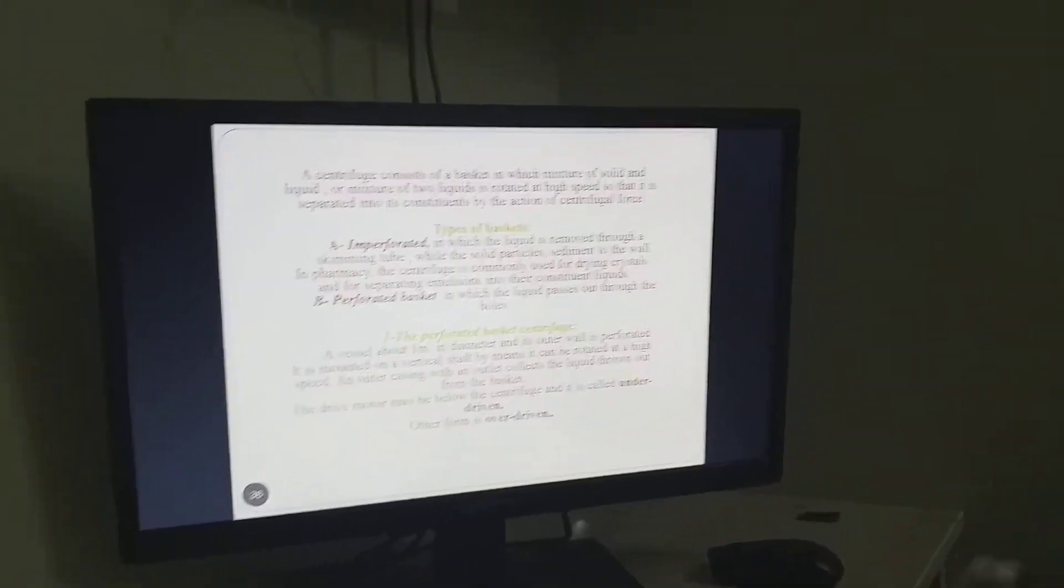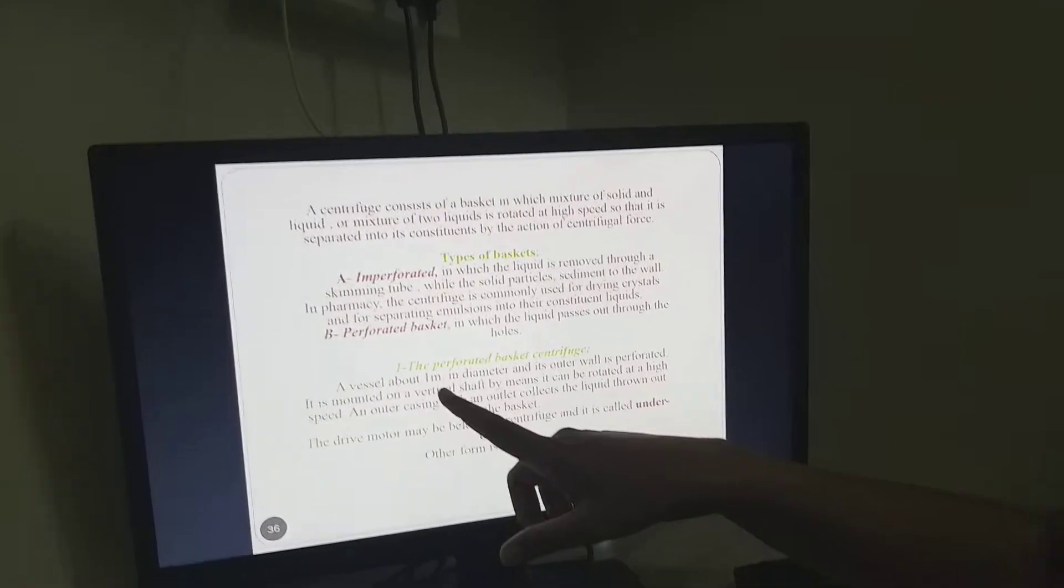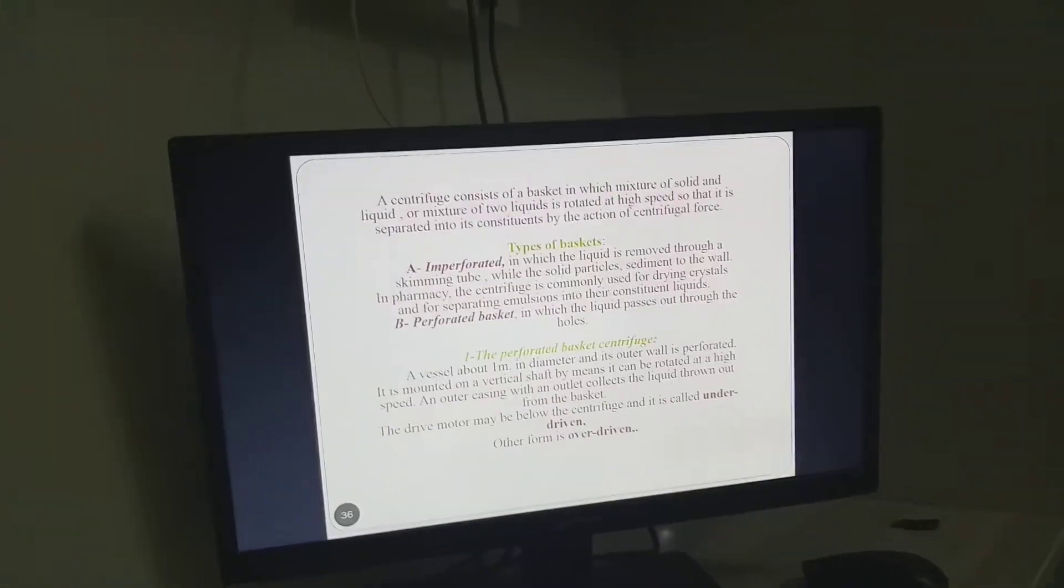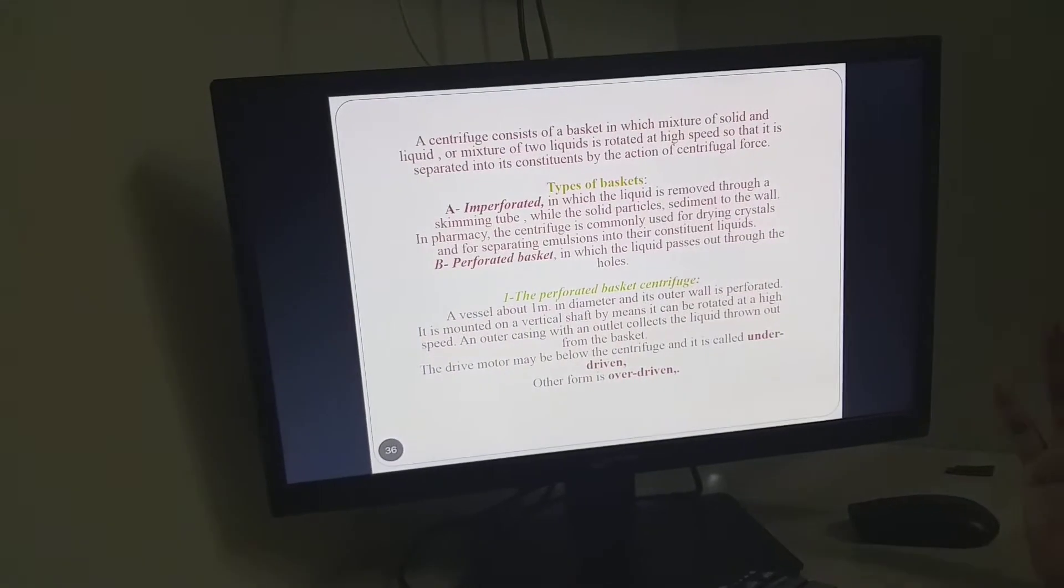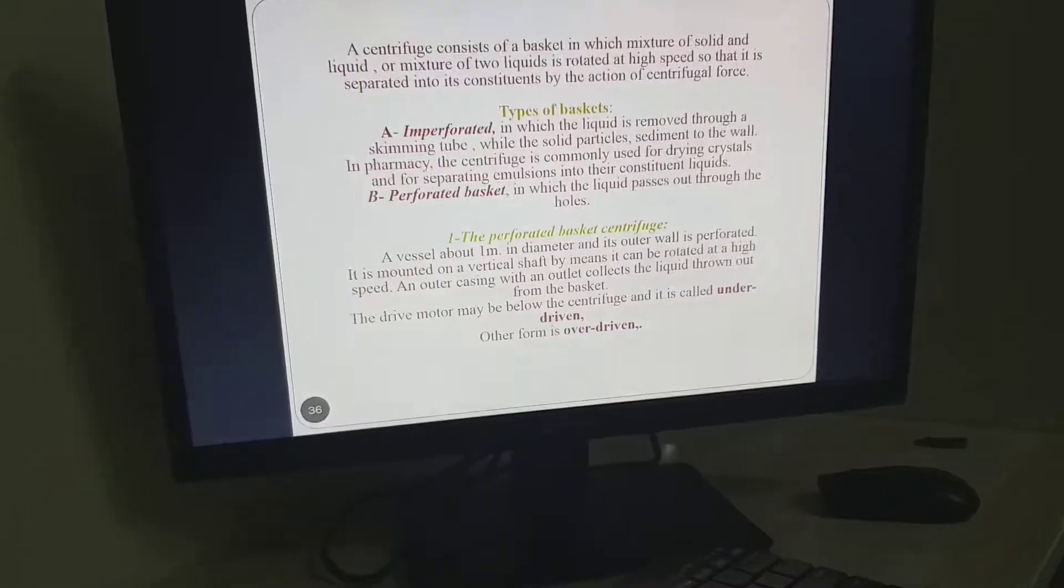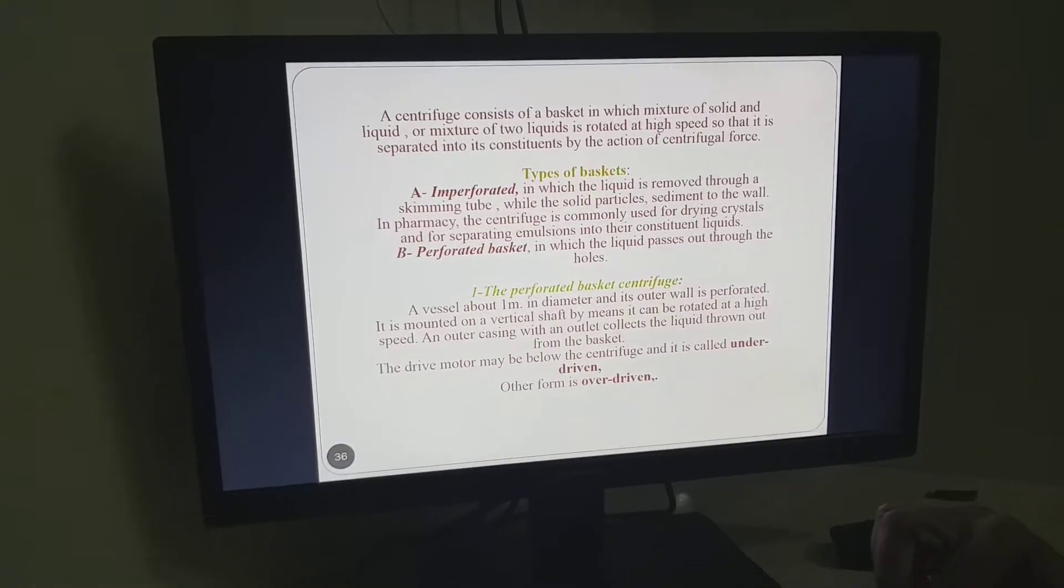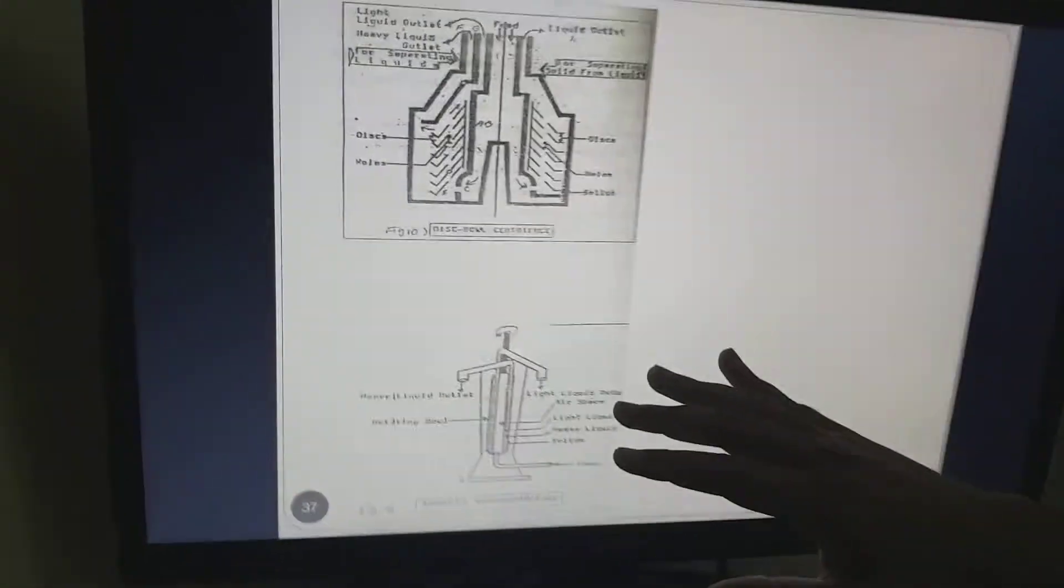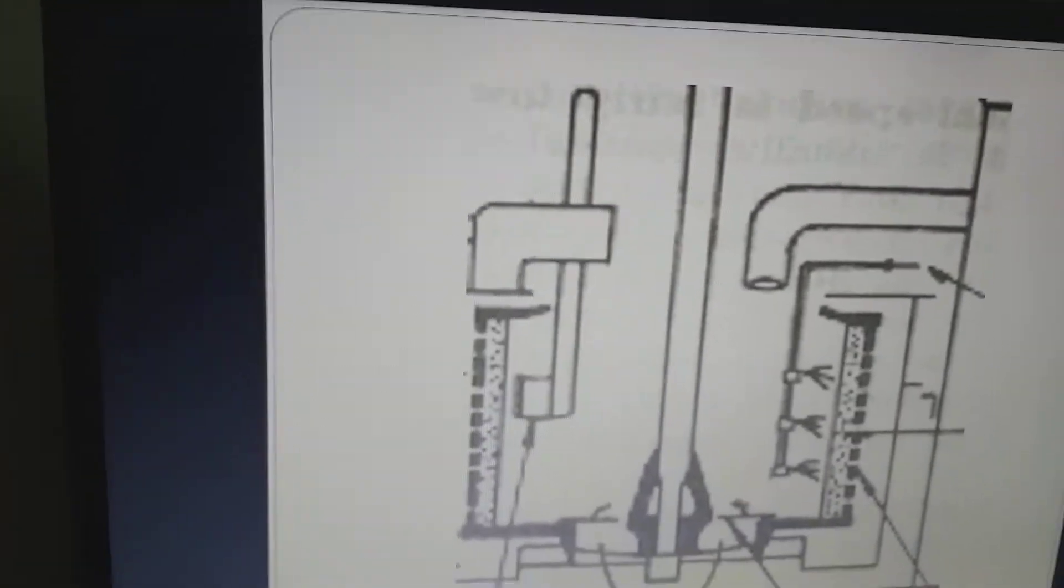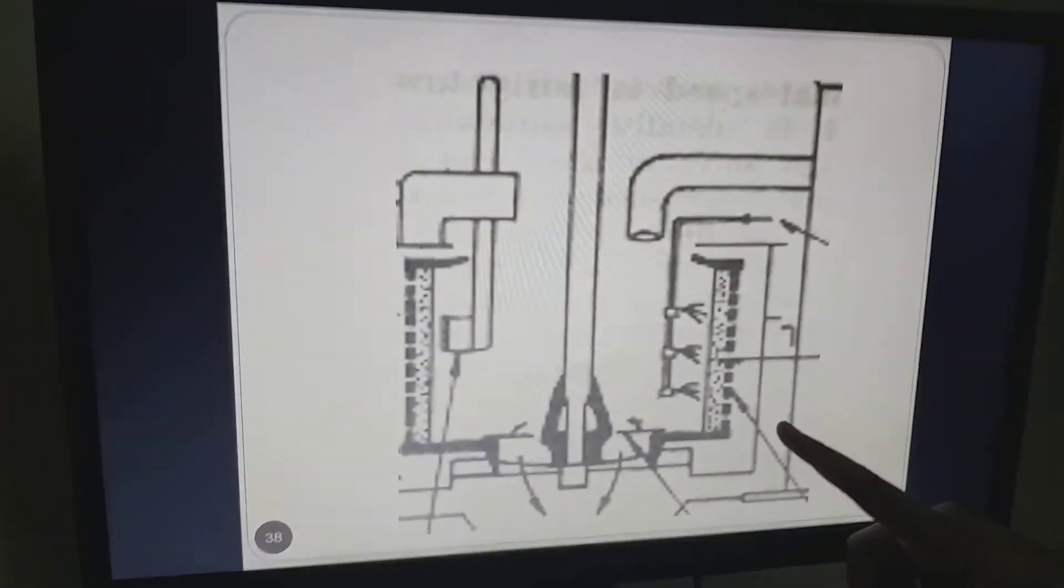Talking about construction, the basket centrifuge vessel generally has a diameter of one meter, its outer wall is perforated, and it's mounted on a vertical shaft. In our mechanical operation lab at KK Wag Engineering College, we have this perforated basket centrifuge setup. Now I'm showing you different diagrams of the perforated basket tubes.